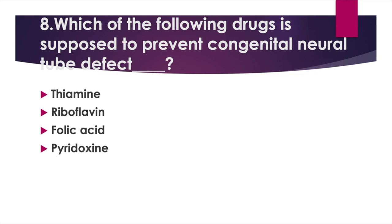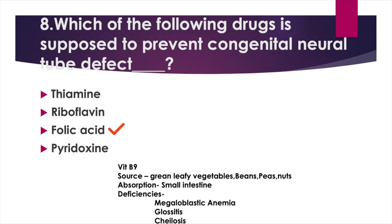Which of the following drugs is supposed to prevent congenital neural tube defect? Option A: Thiamine, Option B: Riboflavin, Option C: Folic acid, Option D: Pyridoxine. Answer: Option C, Folic acid. Folic acid is also known as Vitamin B9. Sources: green leafy vegetables, beans, peas, and nuts. Absorption: small intestine.